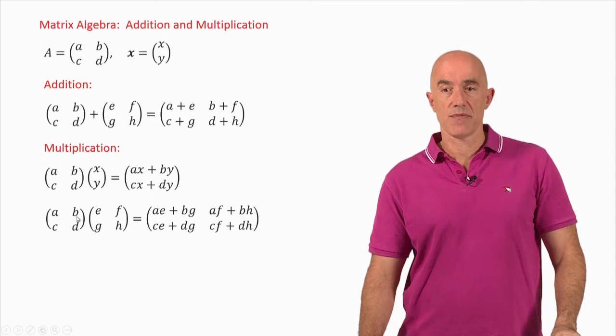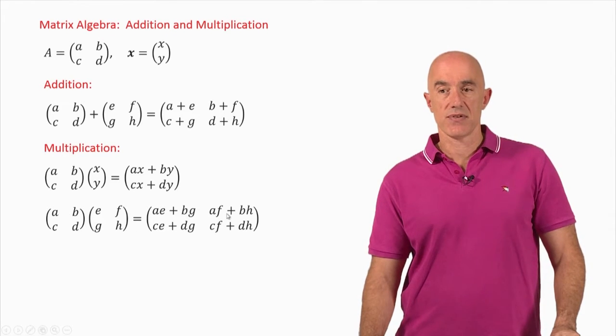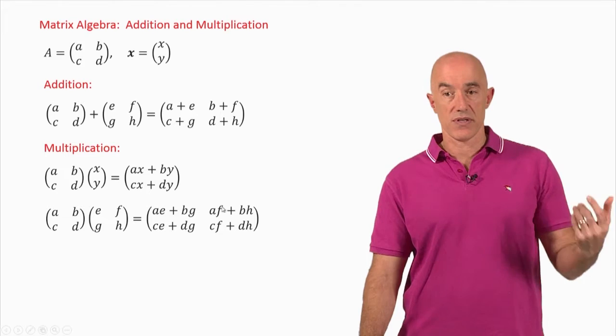Then we go A, B multiplied against F, H. So A times F plus B times H. That goes in this element. So the first row times the second column gives us the element in the first row and second column.